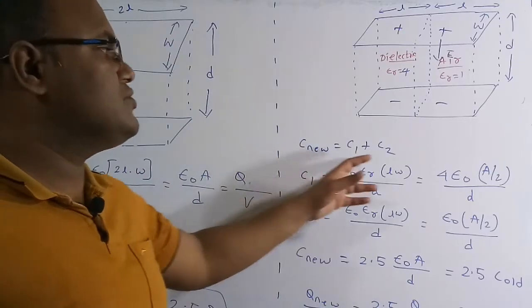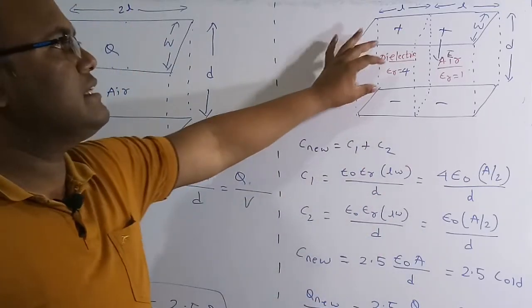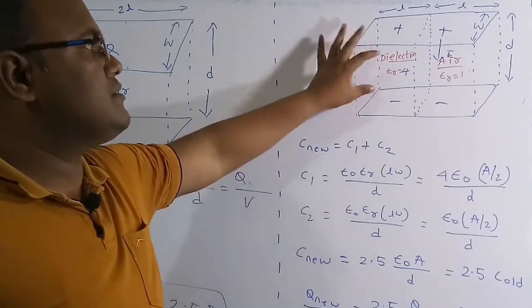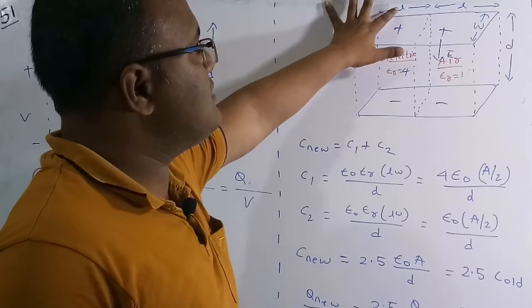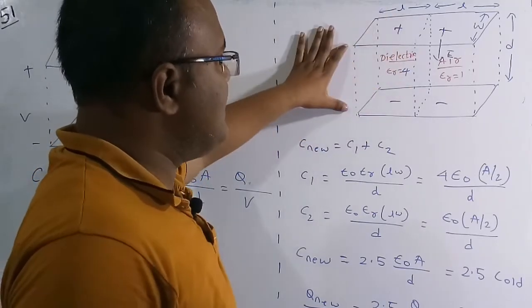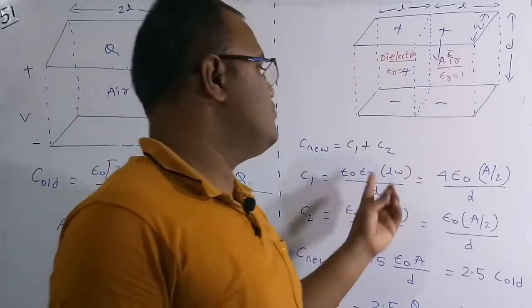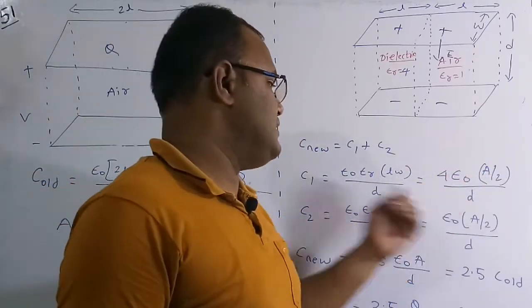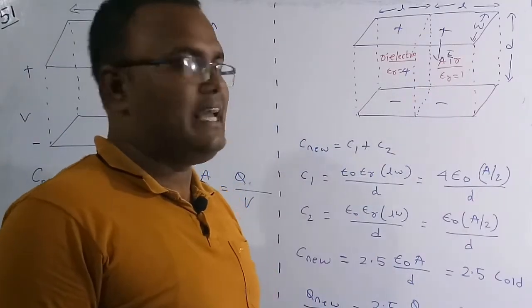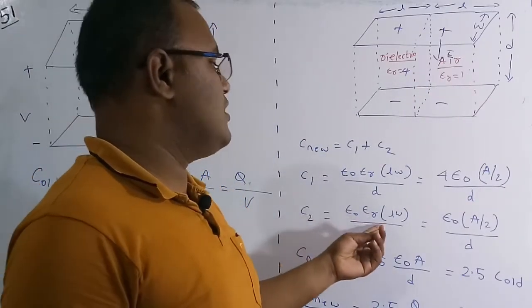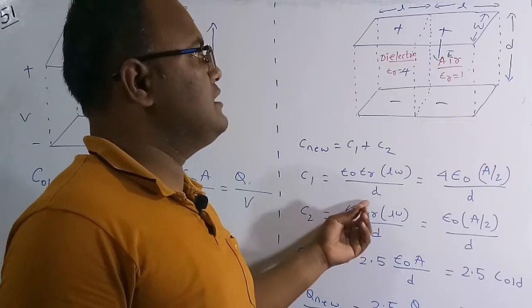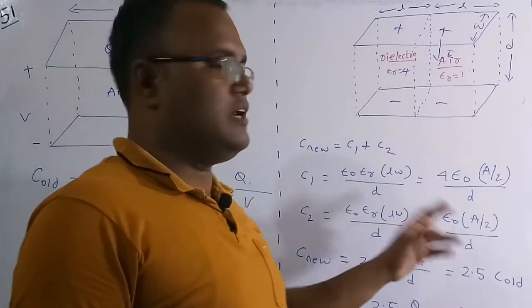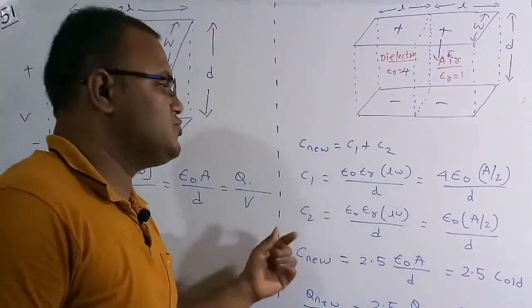When the electric field is parallel to the dielectric interface, the capacitances are in parallel. When the electric field is perpendicular to the interface, capacitances are in series. So C_new equals C1 plus C2. C1, due to the dielectric oil with epsilon_r equals 4, equals 4 times epsilon times (A/2) divided by d. C2 equals epsilon times (A/2) divided by d, since epsilon_r equals 1 for the remaining half.